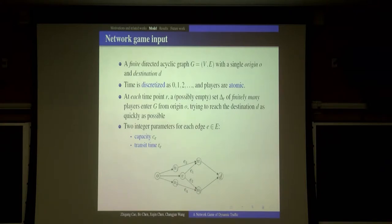Suppose we are given a binary directed acyclic graph G with a single origin O and destination D. Time is discretized as 0, 1 to infinity, and the players are atomic. At each integer time point, a set of players enter the network from origin O, trying to reach the destination D as quickly as possible.